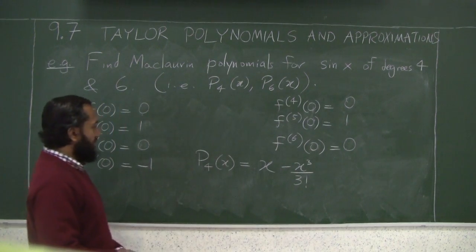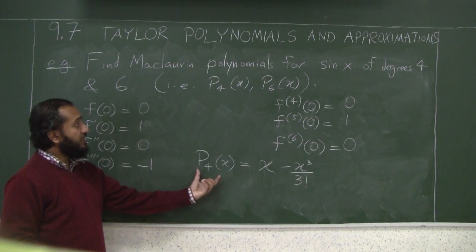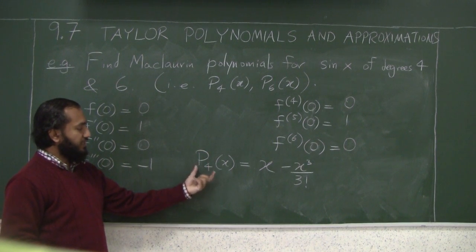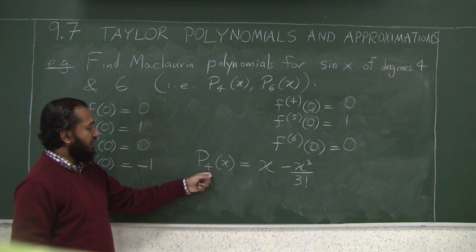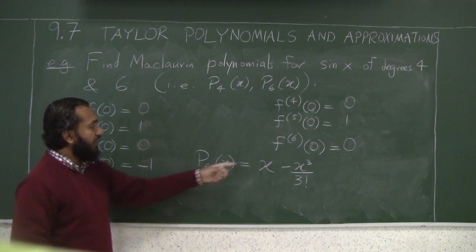So this is your approximating polynomial for sine of x near 0 degrees or 0 radians, the approximate polynomial of degree 4.